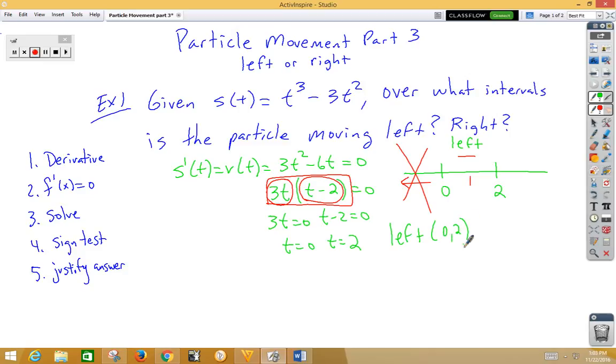Now let's pick a number to the right of two. It doesn't matter which one we use, but I usually use the smallest one, which is three. And again, let's plug in. So when we plug in to 3t or 3t, we get a positive. t minus 2, we get a positive. A positive times a positive is a positive. That means over this interval, the particle is moving to the right. So moving to the right over the interval from two to infinity.